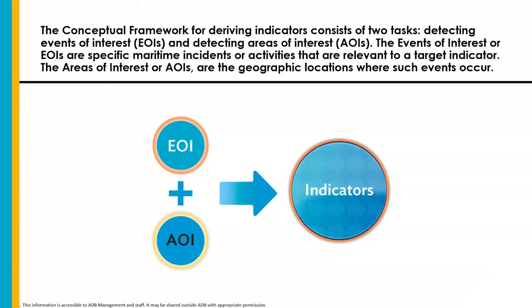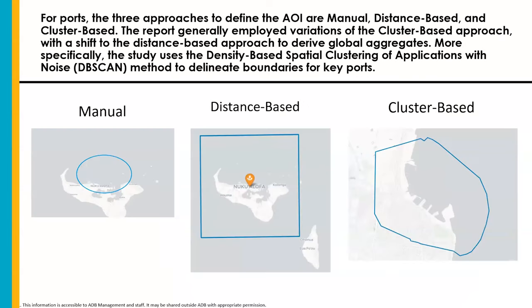For ports, we classify the approaches to define the AOI into three: the manual, distance-based, and cluster-based approach. The manual approach is the most straightforward — you draw a boundary, such as an oval shape, and define it as the port's AOI. This could yield the most accurate AOI if done with expert input or high-quality ground data. However, this approach becomes impractical as the number of ports rises. If you're studying hundreds or thousands of ports, it would be too tedious to manually draw the boundary for each one. The distance-based approach sets the boundaries of a port as a predefined distance from its center — for example, 22 kilometers — but no guarantee can be made over accuracy, and the boundaries may change over time due to expansions and closures.